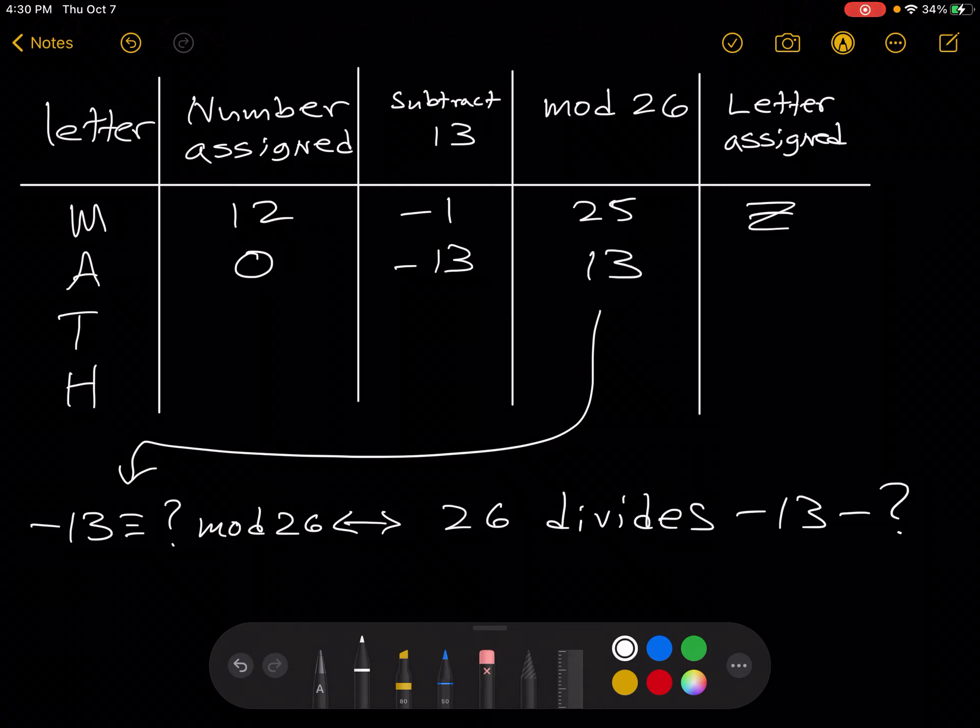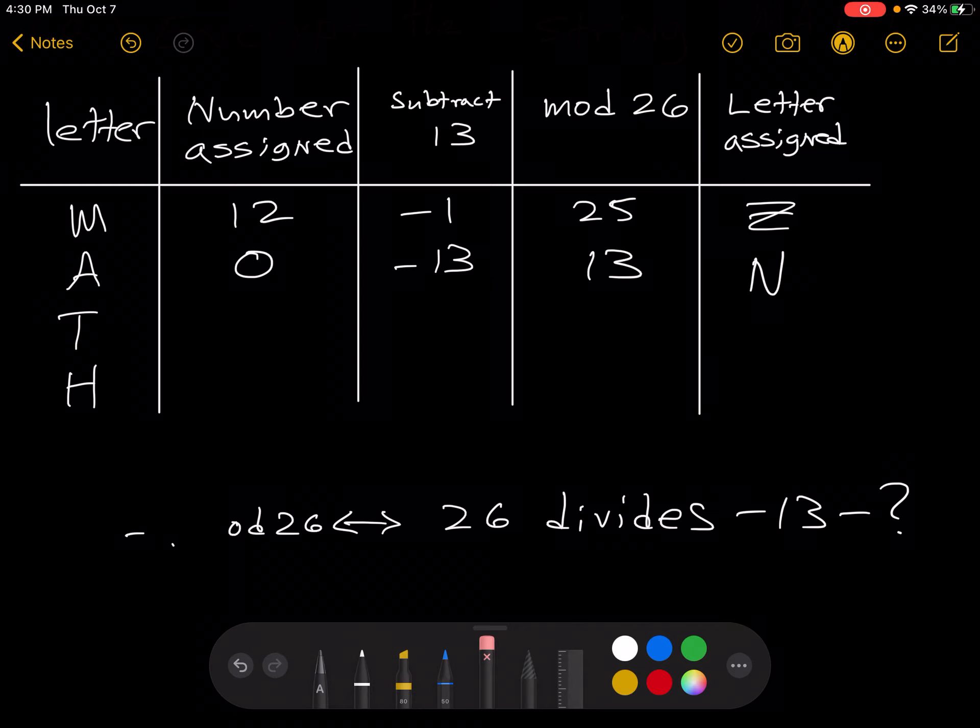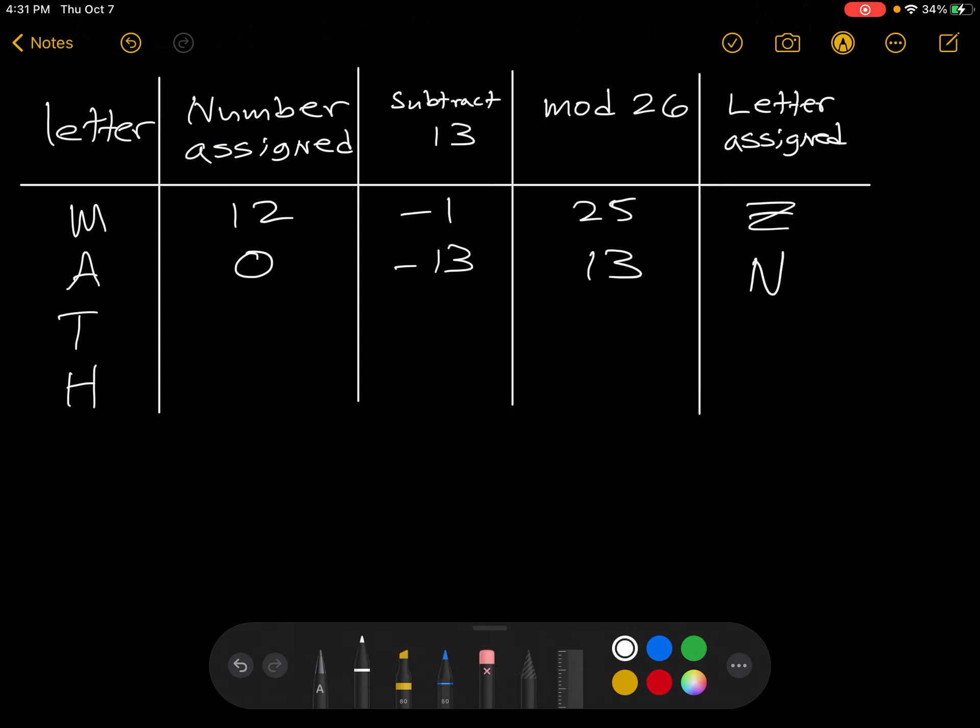Looking in the table above, we see that 13 is assigned to the letter N. Moving on to T. In the table, T is assigned the number 19.